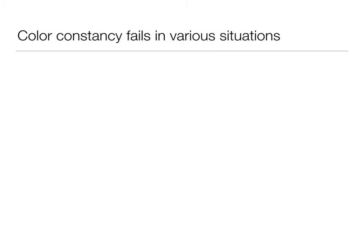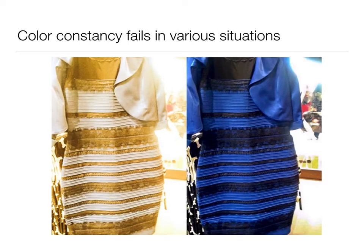Another situation where color constancy can fail is with the dress. Personally, when I saw this dress the first time on social media, I would look at it and it would look blue and black, and then look again and it would look white and gold — I could scroll up and down in my Facebook feed and really trip myself out. What was going on, at least for me, was issues with lighting constancy. My brain was not determining that the lighting situations were the same, so it was changing what color it thought the dress was.